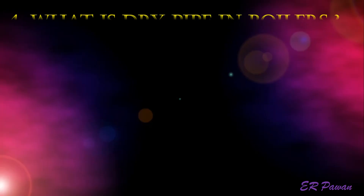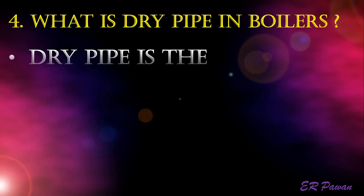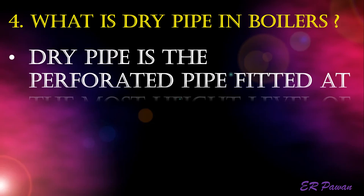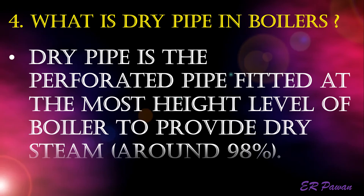Question 4: What is a dry pipe in boilers? A dry pipe is the perforated pipe fitted at the highest level of the boiler to provide dry steam of around 98%.